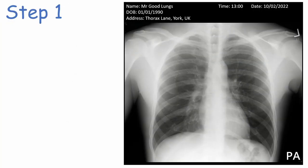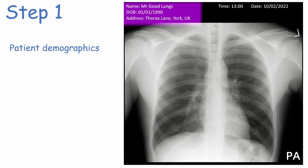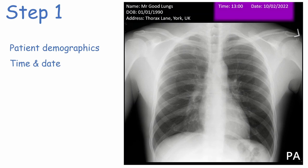When interpreting a chest X-ray there are always three steps. Step one is to check patient demographics. It's best practice to use three identification points to make sure you get the right patient. We also need to check the time and date of the image to make sure we're using the right image for that patient.